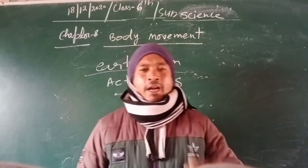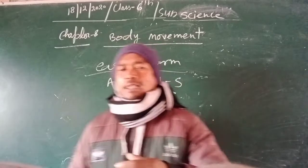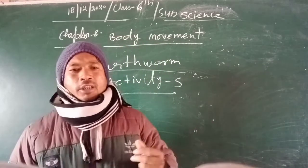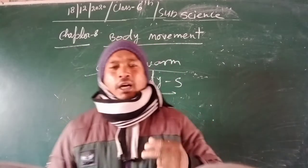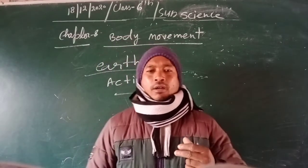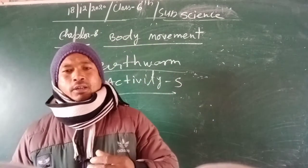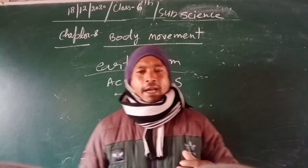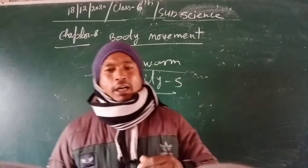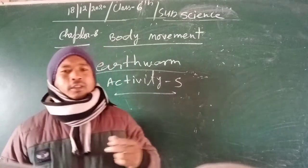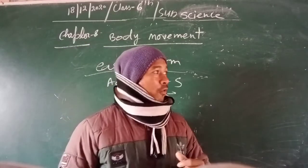During the movement of the earthworm, it first extends the front part of the body, keeping the rear portion fixed on the ground. Then the front anchors and the rear end is released — the body shortens and pulls the rear end forward.